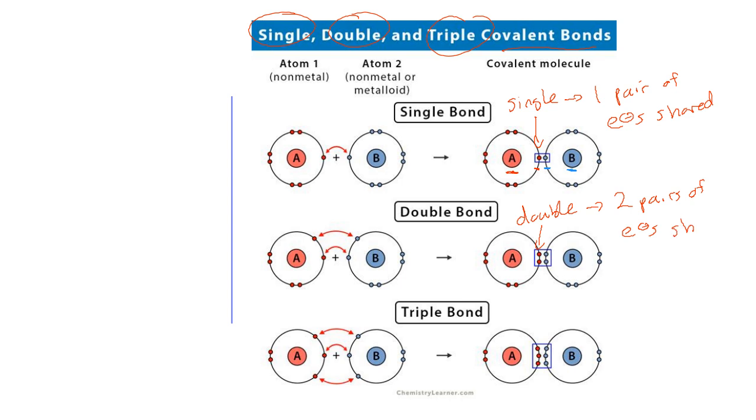Finally, you can see a triple covalent bond, because you have three pairs of electrons being shared.